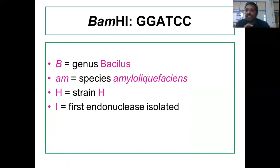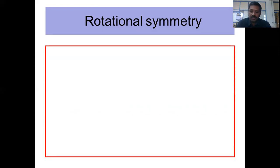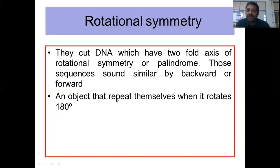One of the most important features of type II restriction endonucleases is that their restriction sites have rotational symmetry. They cut DNA which has a twofold axis of rotational symmetry, also called palindromes — sequences that read the same forward and backward. A twofold axis of rotational symmetry means an object repeats itself when rotated 180 degrees.